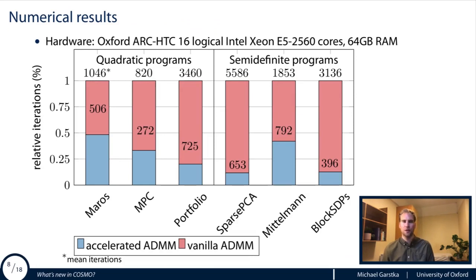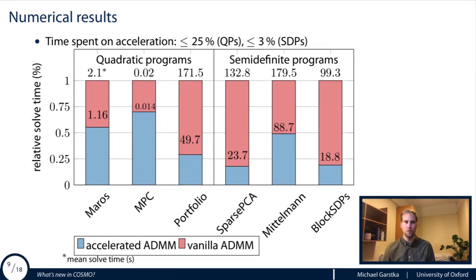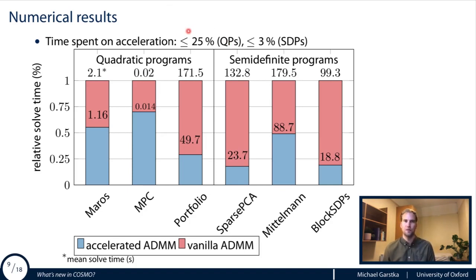Benchmark results over more than 600 problems from six problem sets show that the mean reduction in iterations is usually more than 50%, sometimes up to 80%. For solve time, for SDPs and large QPs you get speedups of more than 50%, and even more than 75% in some cases. Notably, the time spent finding the accelerated point is less than 25% for QPs and less than 3% for SDPs — so for SDPs it's almost free.